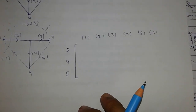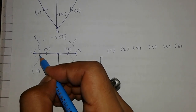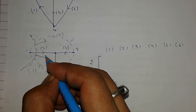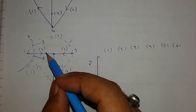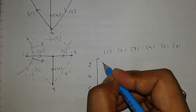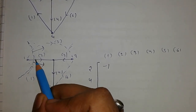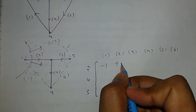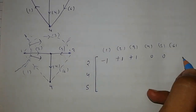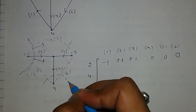For edge 2, I am making a cut here. The direction of edge 2 is away from the node, so the direction of the cut is also that way. Edge 1 is towards the cut direction, so take it as minus one. Edge 2 is in the same direction as the cut, so take it as plus one. Edge 3 is also in the same direction, so take it as plus one. The remaining are zero.